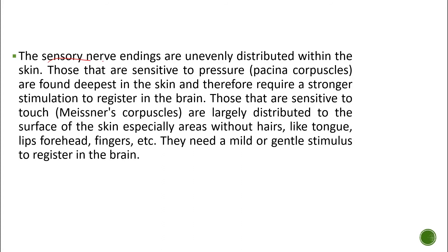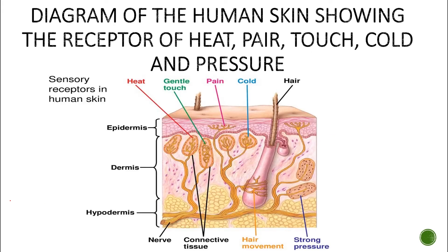The sensory nerve endings are unevenly distributed within the skin. Those sensitive to pressure — called Pacinian corpuscles — are found deepest in the skin and therefore require a stronger stimulation to register in the brain. Those sensitive to touch — Meissner's corpuscles — are largely distributed near the surface of the skin, especially in areas without hairs like the tongue and forehead, and need only a mild or gentle stimulus to register in the brain.